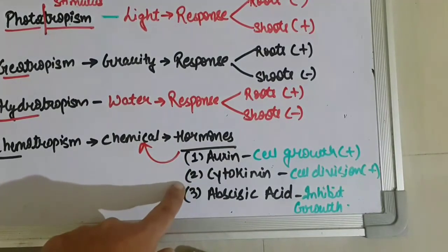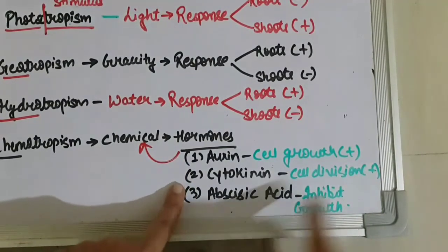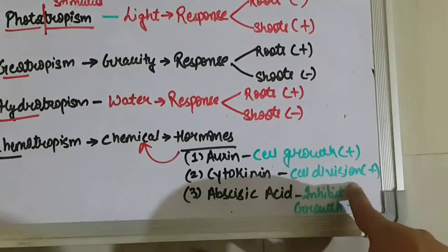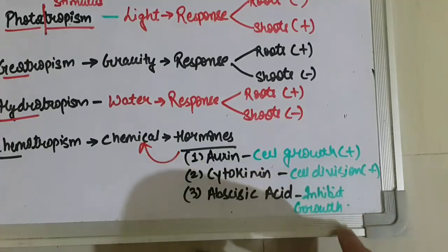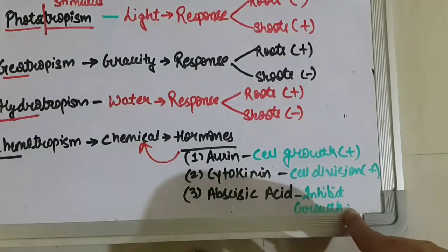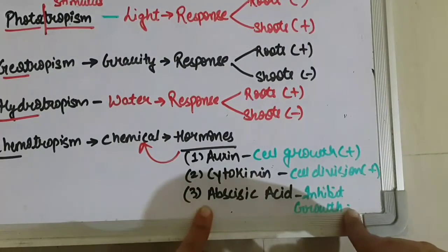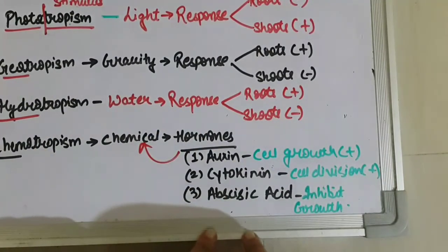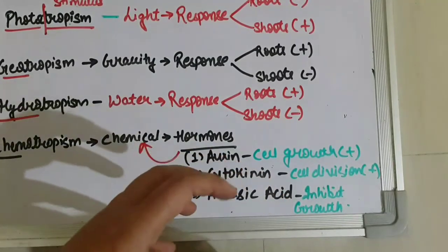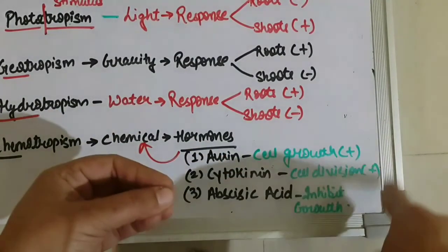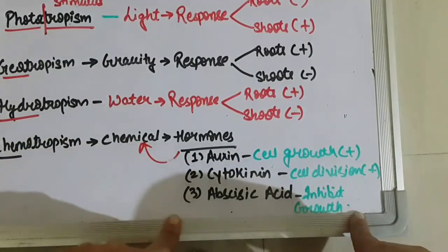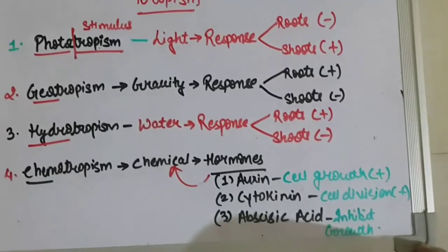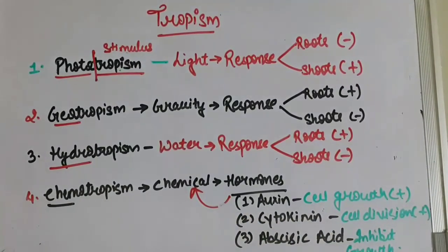Another example of a plant hormone is cytokinin, which promotes cell division and allows continuous division of the cell. There is also a hormone that inhibits growth and does not allow growth after a particular period — that hormone is abscisic acid. When these hormones are released in plants, the affected cells show appropriate functions depending on which plant hormone is released. This is how coordination occurs in plants through stimuli like light, gravity, water, and chemicals.